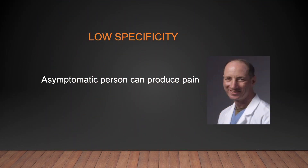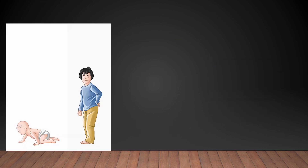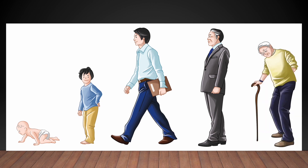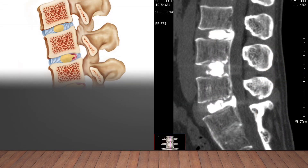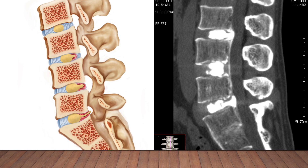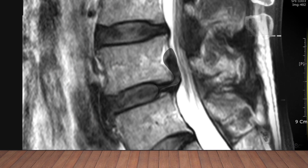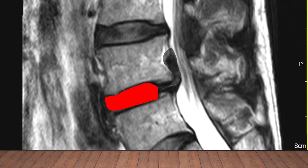Furthermore, according to many studies, provocative discogram has been reported to have a high rate of false positive results. With the aging process, annular tears advance and worsen — this is a natural course for all humanity. Most people do not complain of pain in their daily activities. Artificial increment of intra-discal pressure could provoke pain in a disrupted annulus. To make it worse, it may be possible that pressurized contrast media pushes disc content through the annular defect.